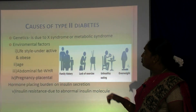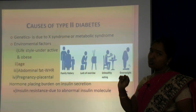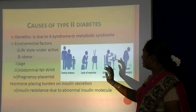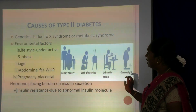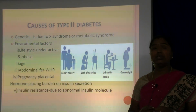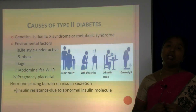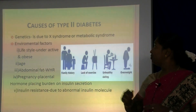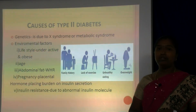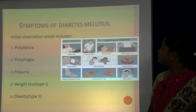The causes of Type 2 diabetes also involve genetic and environmental factors. Genetically it relates to X syndrome — that is, metabolic syndrome. Environmental factors include family history, lack of exercise and unhealthy eating. Lifestyle — being underactive and obese — plays a key role, occurring in adult or elderly age. The abdominal factor, that is increased waist-to-hip ratio, can lead to diabetes. The placental hormone places a burden on insulin secretion during pregnancy, and insulin resistance due to abnormal insulin also contributes.